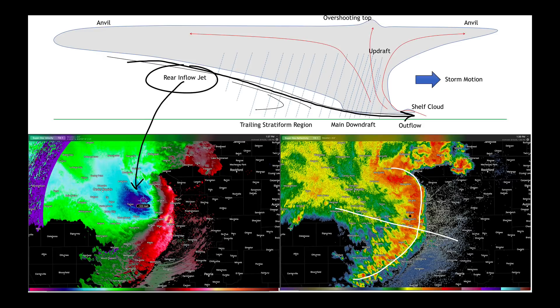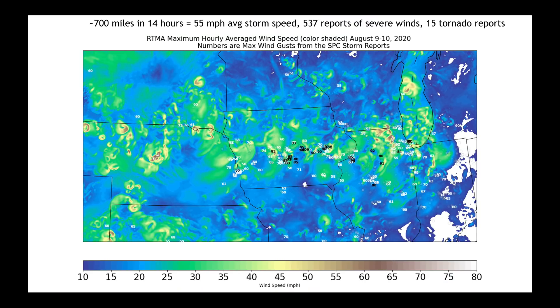Looking at our Doppler radar image — the radial velocities telling us how fast it's moving — you can see that right in through this part of the storm, the rear-end flow jet was producing, at about a thousand feet above the ground, wind speeds of 122 miles an hour as this went racing toward the Illinois-Iowa border. As those winds got closer to the ground, they did slow down, but not too much, and this is what gave us so much damage across this area.